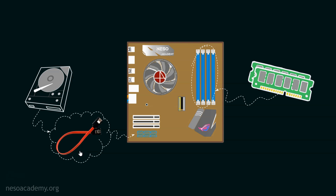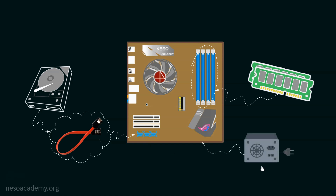The SATA cable is connected at one end to the hard disk drive and on the other end to the SATA ports. Apart from these, we also have the power supply, more technically called SMPS or Switch Mode Power Supply. The main purpose of this SMPS is to obtain a controlled direct current supply, which helps in powering all these components.